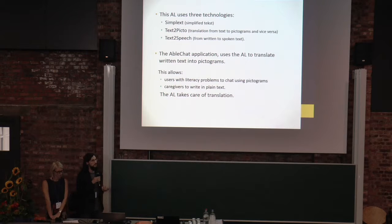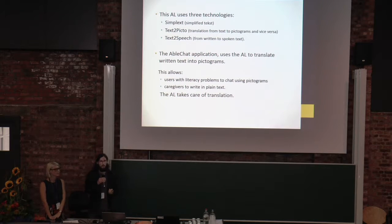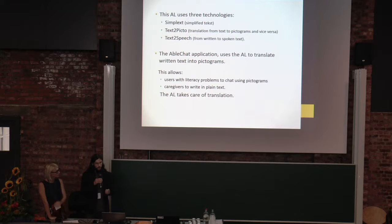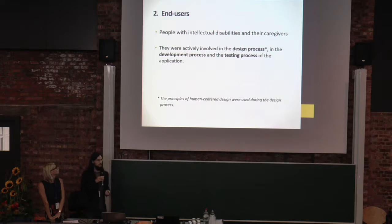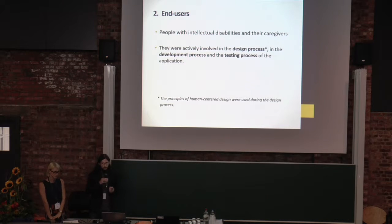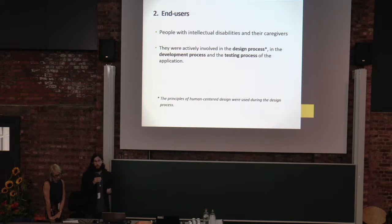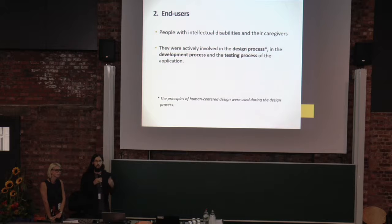The AbleChat application makes use of the text-to-pictogram component, allowing users with literacy problems to communicate with caregivers who write in plain text — they can chat with each other through this translation layer. End users are people with intellectual disabilities, specifically those who have trouble reading and writing. They were actively involved in the development process through user-centered design, providing direct feedback on whether the application was fulfilling their needs.